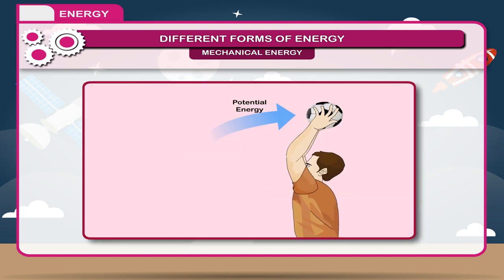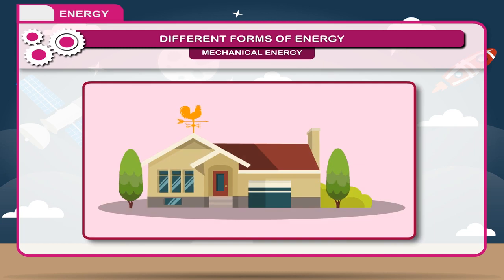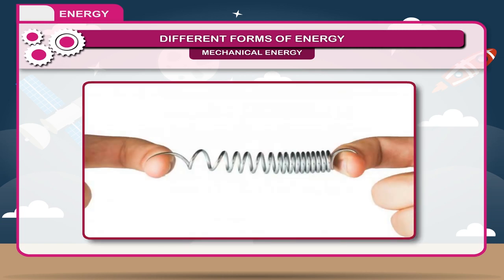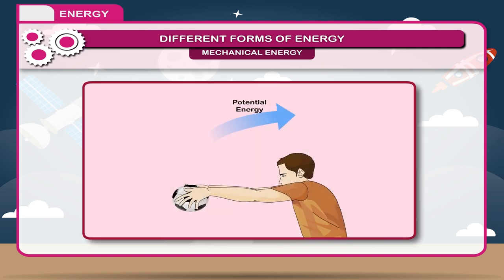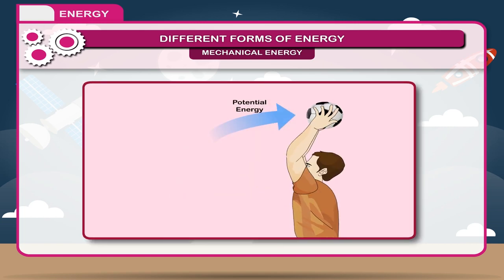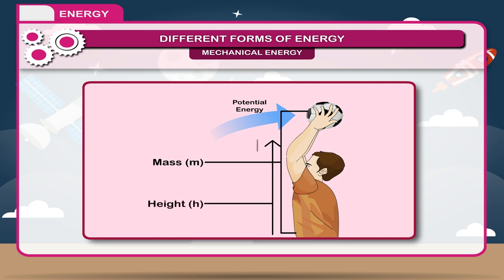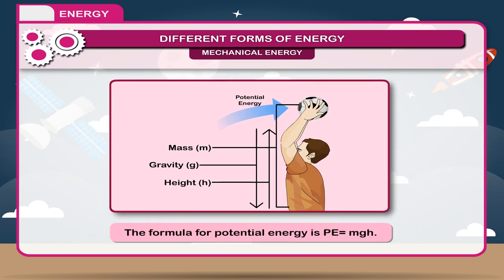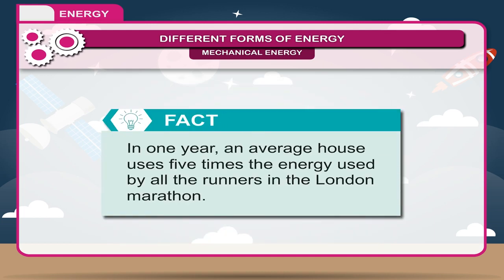The energy possessed by a body due to its position or change in shape is called potential energy. Examples include: energy possessed by an object placed at the top of a roof, a stretched rubber band, and a stretched spring. The potential energy of a body depends on: (1) mass of the body, (2) height of the body, and (3) acceleration due to gravity.